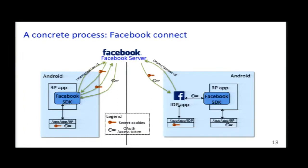If there is a native Facebook app on the Android device, the RP app requests the Facebook application as IDP. The Facebook app sends username and password to the Facebook server and gets the cookie and OAuth access token. It stores the secret cookies in its own internal storage and transmits the OAuth access token to the RP application. So these two kinds of authenticators are located in different places — keep this in mind, as I will show the problem later.